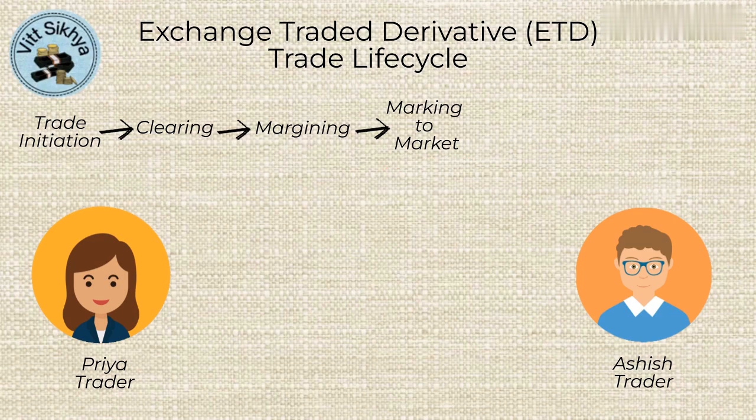The final stage in the life cycle of an ETD is settlement. This is the process of closing out the contract and transferring the funds or the underlying asset between the parties. Settlement can occur in one of two ways — either through physical delivery of the underlying asset or through cash settlement.